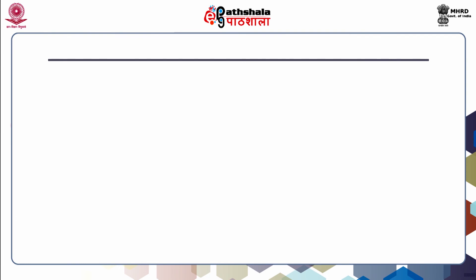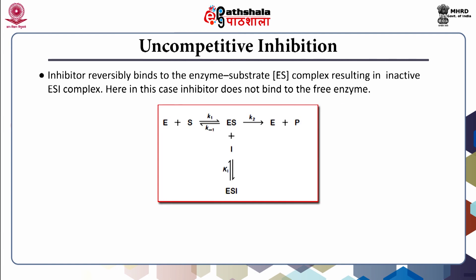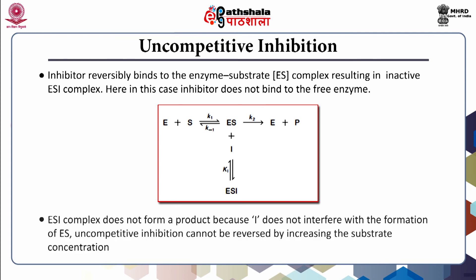In uncompetitive inhibition, the inhibitor reversibly binds to the enzyme-substrate complex, resulting in an inactive enzyme-substrate-inhibitor (ESI) complex. The inhibitor does not bind to the free enzyme. The ESI complex does not form a product. The inhibitor does not interfere with the formation of the enzyme-substrate complex. Uncompetitive inhibition cannot be reversed by increasing the substrate concentration.